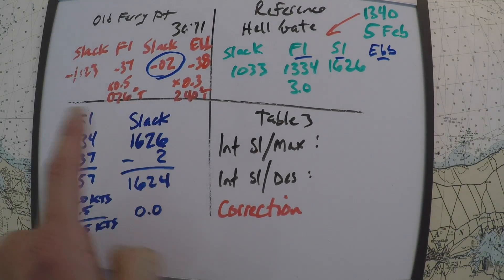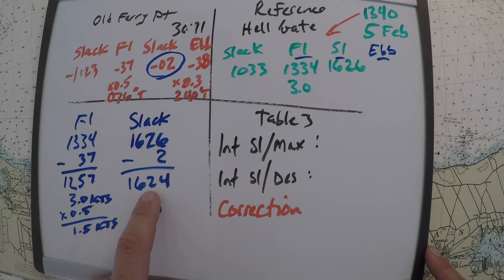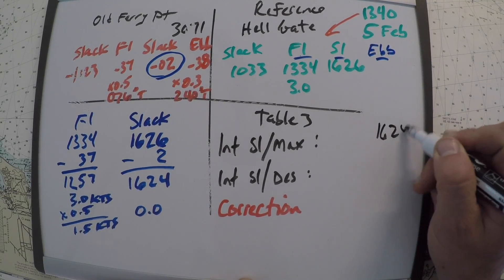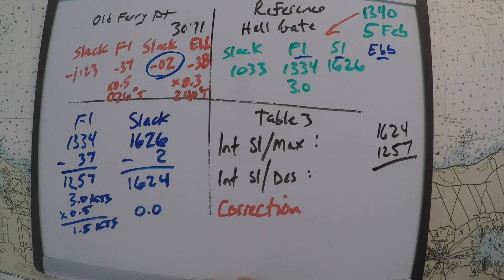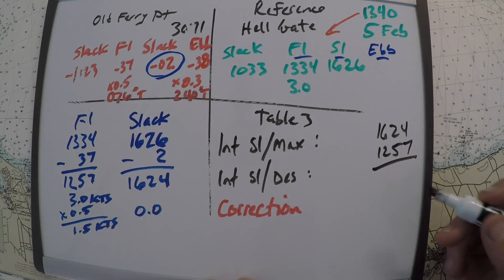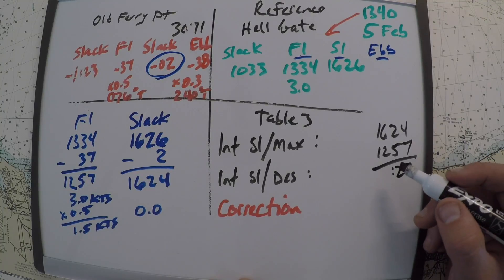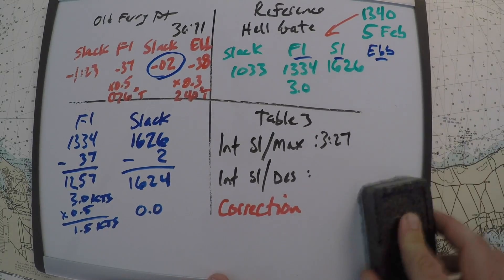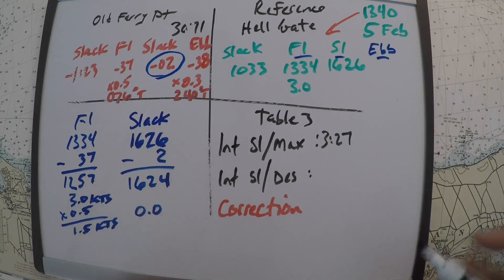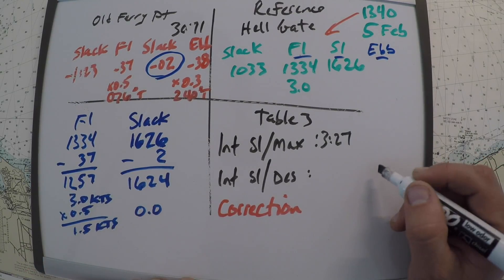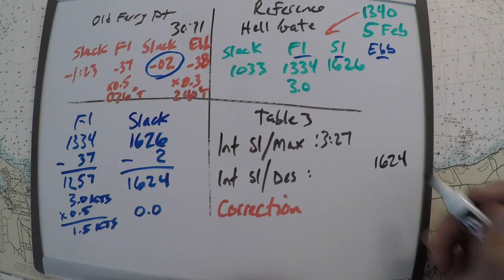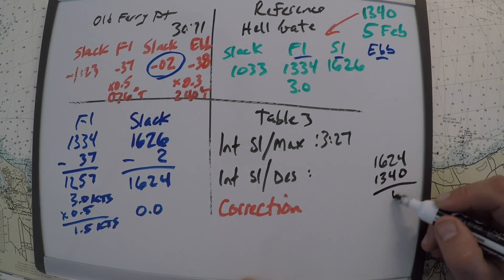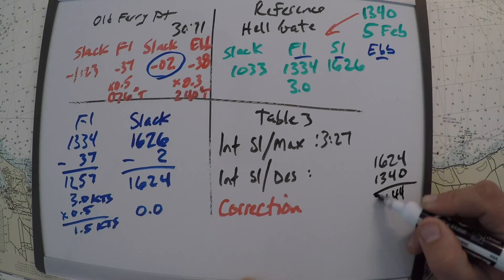All right, so it looks like between slack and max here, between the slack and the flood, it's from 1624 to 1257. So 1624 to 1257. If we do that math out, we'll have 3 hours and 27 minutes from slack and max. And then if we do slack and desired, so slack again was 1624. And the desired time, 1340. How much time elapses there? That's going to be 2 hours and 44 minutes.